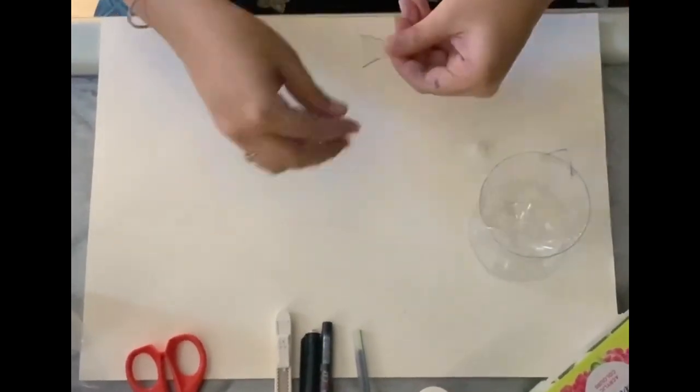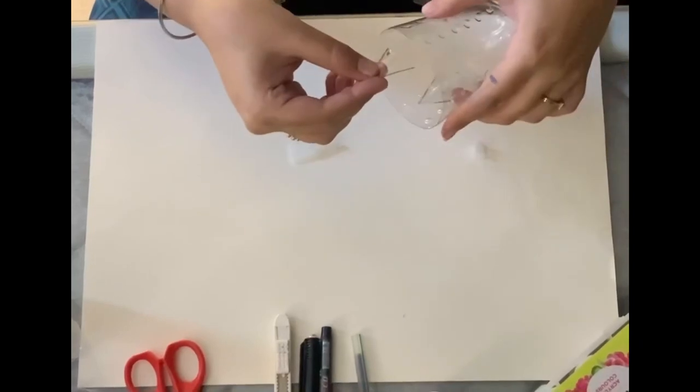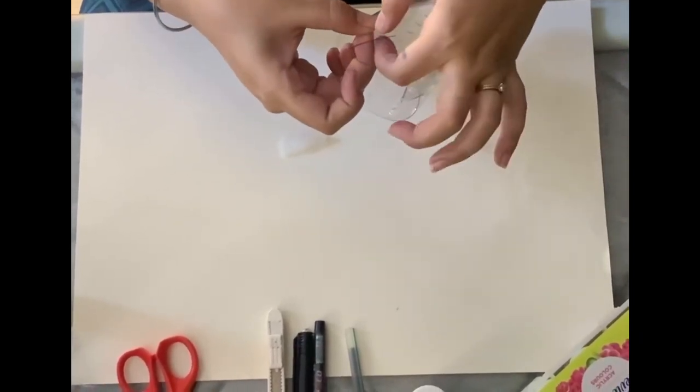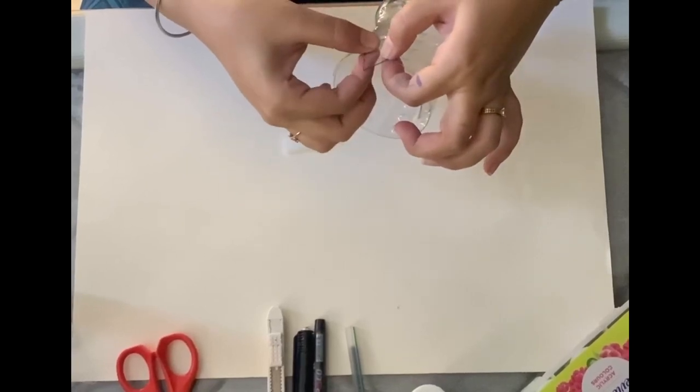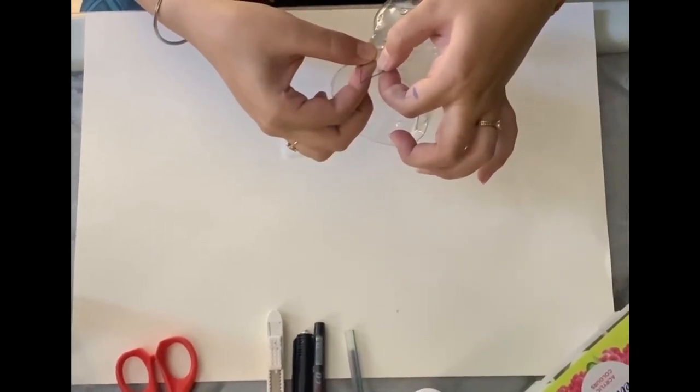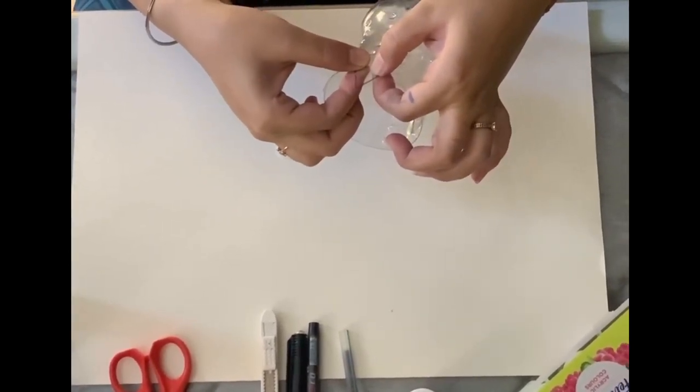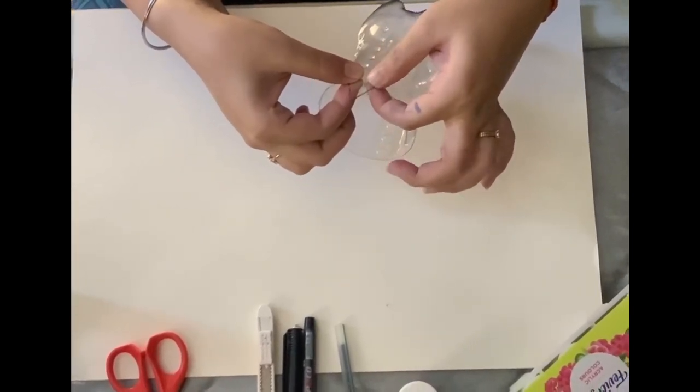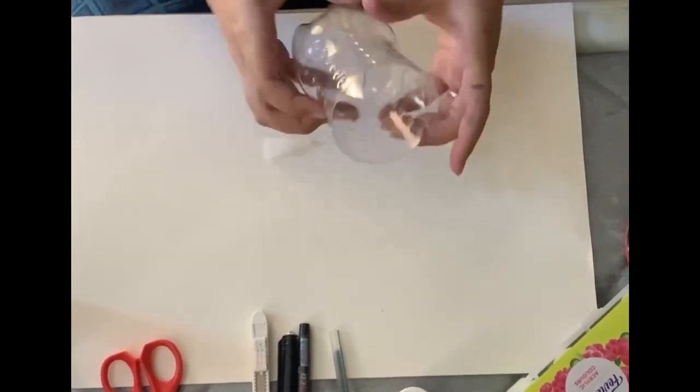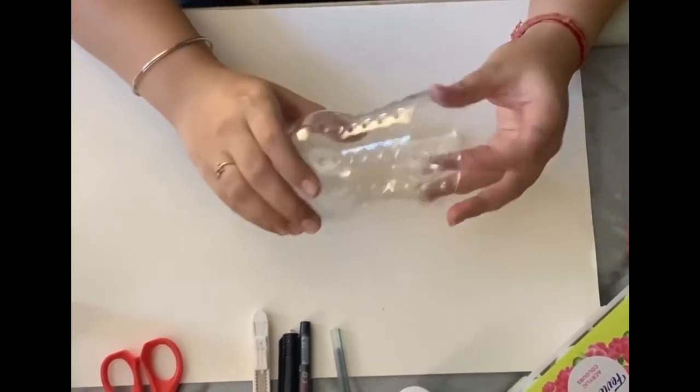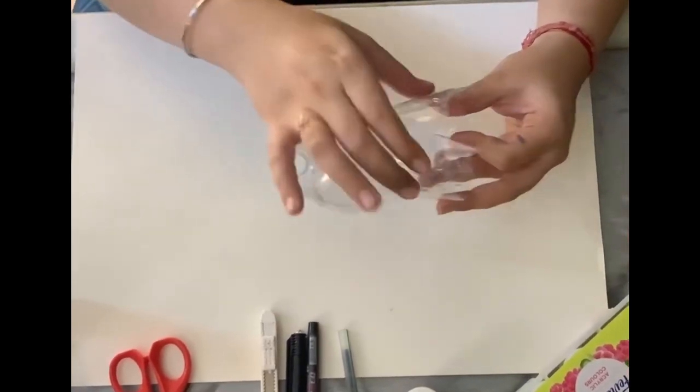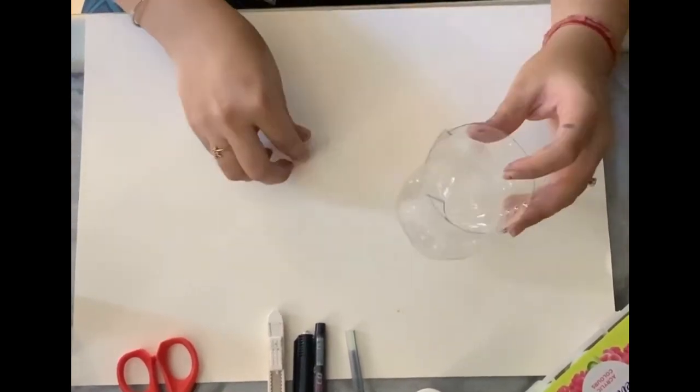I put some glue over here and then wait for 10 to 15 seconds. Now the raw structure of the pen stand is ready. We have the body and we have two ears.